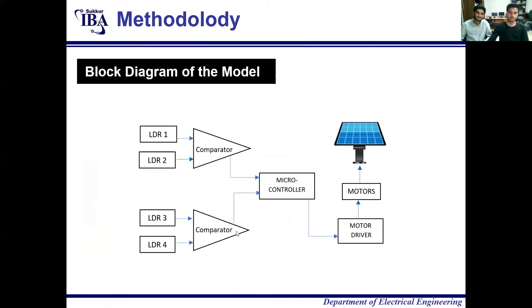Here is the whole block diagram of the working mechanism of the dual-axis solar tracker. Four LDRs — two for horizontal and two for vertical motion — are connected to a comparator. The comparator uses an IR sensor working on light sensitivity and resistivity. If any mismatch occurs, the comparator signals the microcontroller, which sends high or low signals to the H-bridge motor driver circuit, which moves the respective motor accordingly.